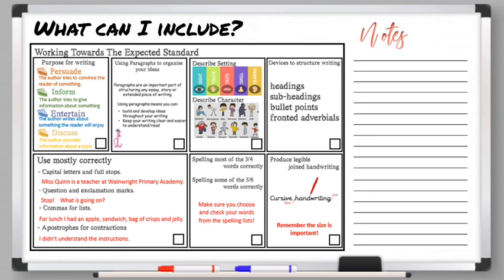Describe setting and character. Definitely. This is the perfect text for both of those things. Don't get too hung up on both because otherwise our story ends up being far too long. A short paragraph about your character and then a short paragraph about your setting or maybe just interlink them together would be absolutely perfect.